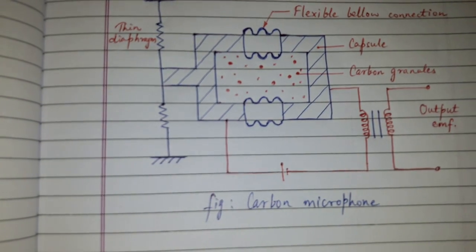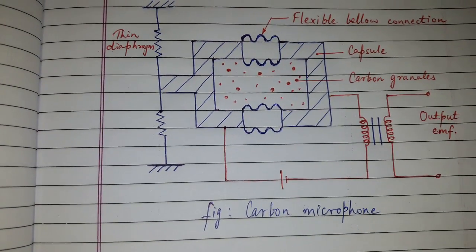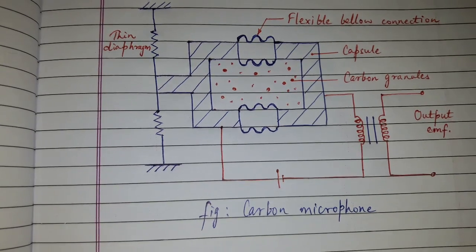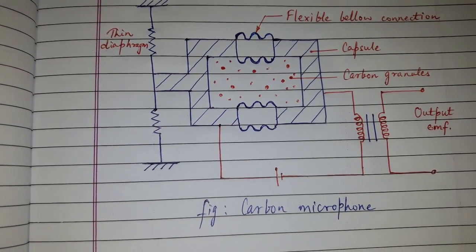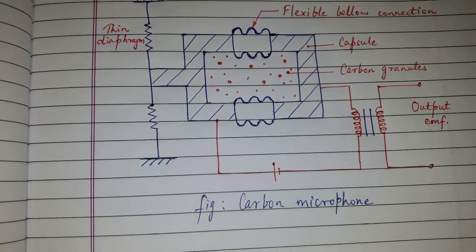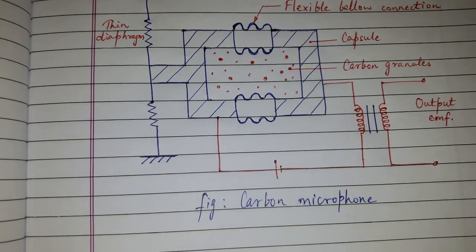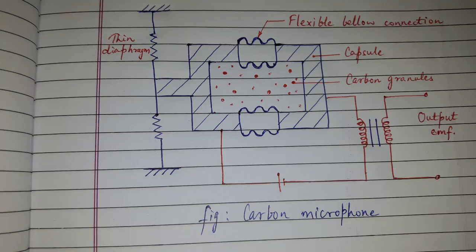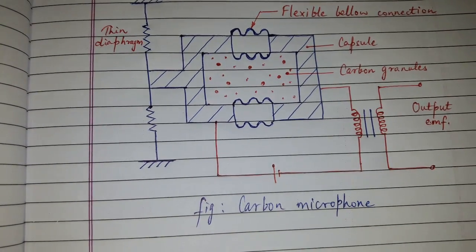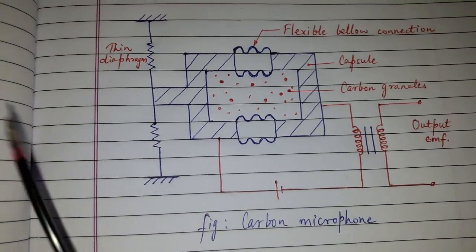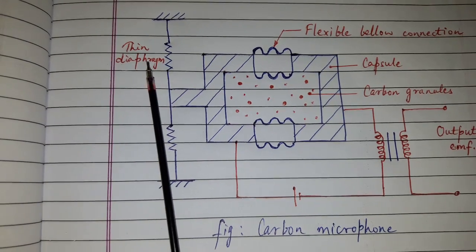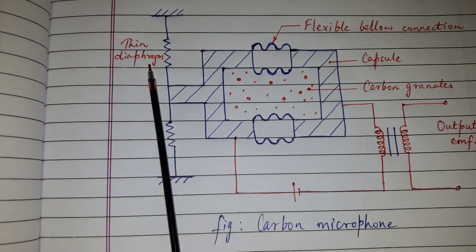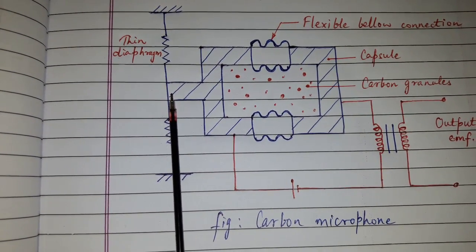Hi friends, today's topic of discussion is carbon microphone. Microphones are transducers which convert sound pressure variation into analog electrical signals. So let us see carbon microphone. Carbon microphone consists of a thin moving diaphragm. The moving diaphragm is connected to a capsule which is having flexible bellow connection which compress and expand.